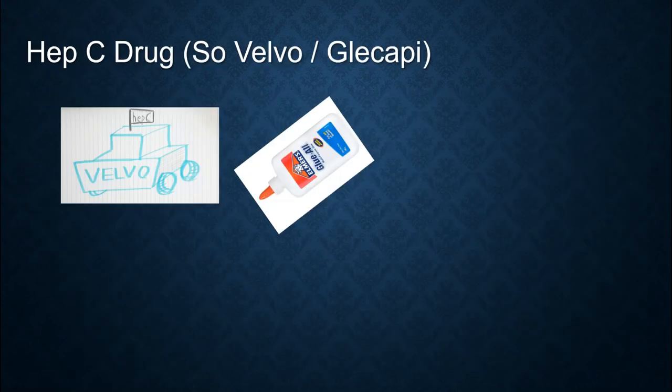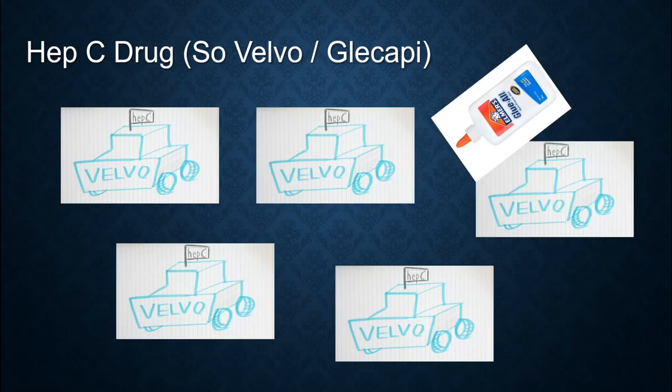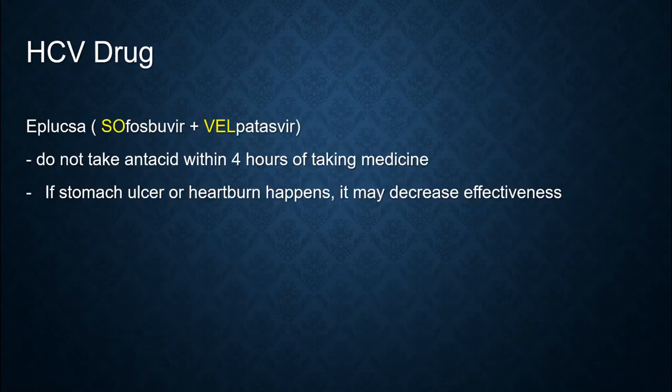What drugs cure hepatitis C? To remember the drugs, use the mnemonic: 'valvo, glecopy' — imagine a Volvo car that we glue and copy. So the drugs are sofosbuvir and velpatasvir, with the brand name Epclusa.